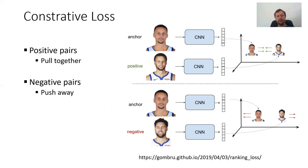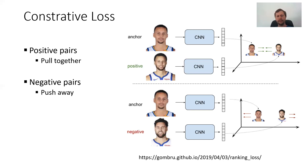With contrastive loss, you have positive pairs and negative pairs. Positive pairs you want to pull together in the vector space, and negative pairs you want to push apart. Visualized with images: two images of the same person should be embedded close together, while two images of different persons should be pushed apart. The challenge is balancing how many positive and negative pairs you have. The loss also has collapse issues — all images can be pulled together if already close, or pushed too far apart. So the loss is quite simple but does not work that well.